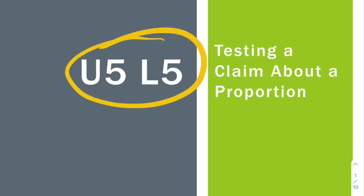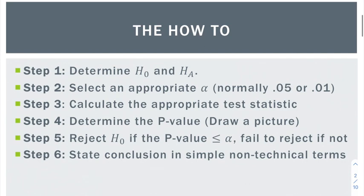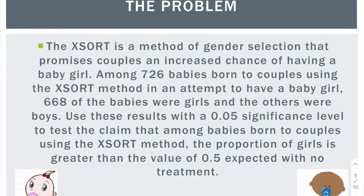All right, welcome to Unit 5 Lesson 5, which is about testing a claim about a proportion. We're still dealing with hypothesis tests here, so these steps should look pretty familiar as we've done them in every lesson. The only place things are going to get different are with the test statistic and the p-value. Let's take a look at this problem and get an idea of what a proportion is and how we test it.